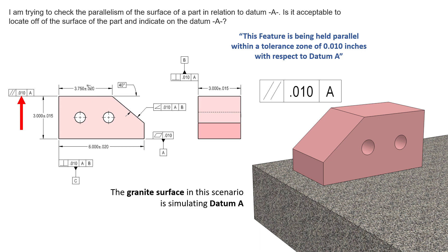And we go inspect it. Our inspection will give us a value that represents the combined effects of form as well as orientation. They will exist simultaneously together.